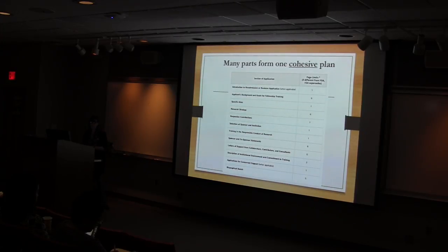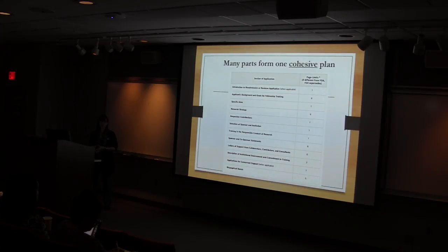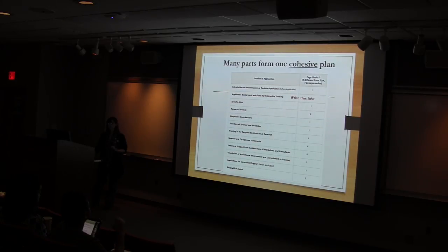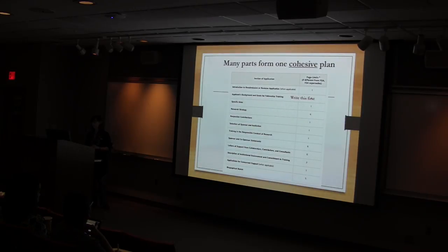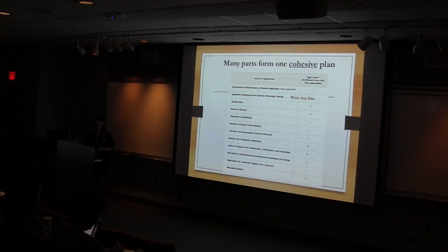There are a lot of parts in this application — a lot of pages, pieces, and parts. You can look up NIH table and page limits, which are updated regularly. There's a strategy to how you approach writing those. For an F32, I recommend the first thing you sit down and write is your background and goals for fellowship training. Think clearly about that investment in your future productivity and your career, and start there. What do you want your independent research program to look like? What kind of investigator do you want to be? Then step backward: what do you need to learn to get there? How will your research project and training activities help you meet those goals?